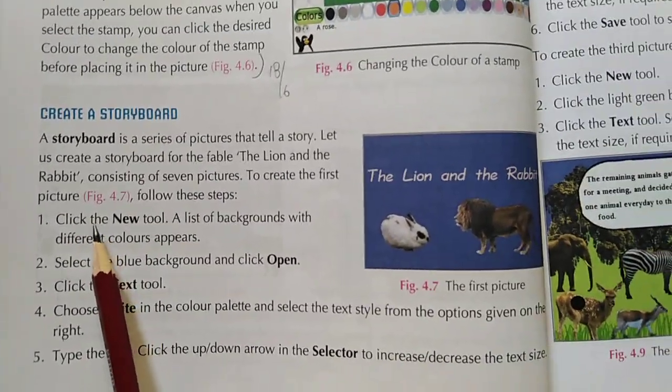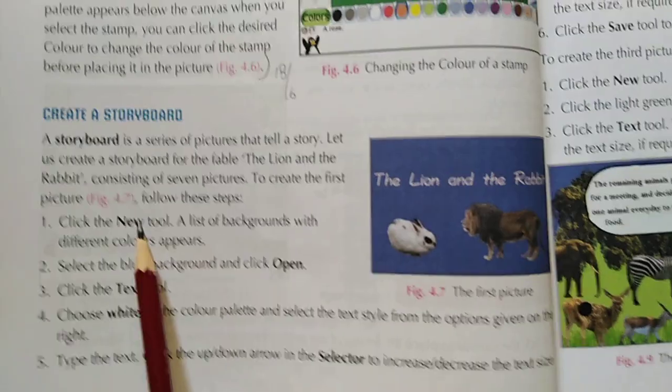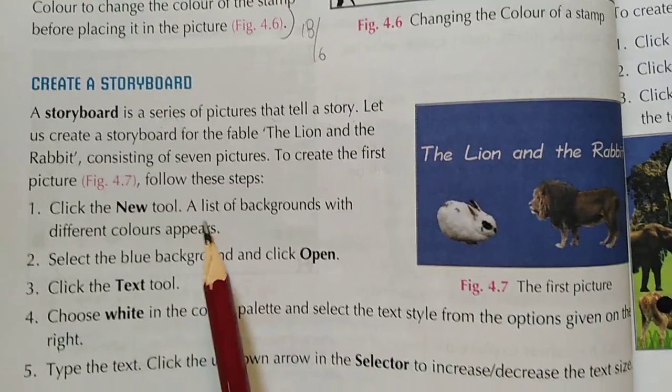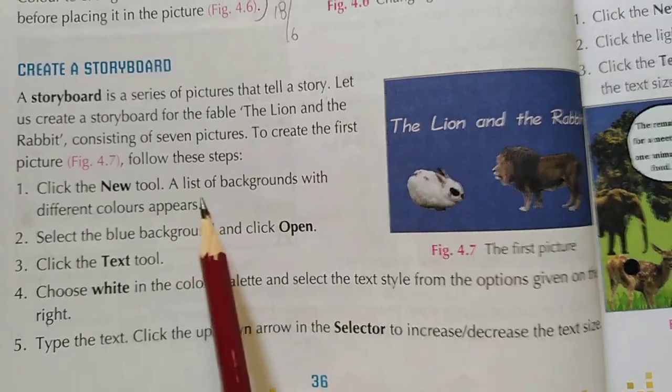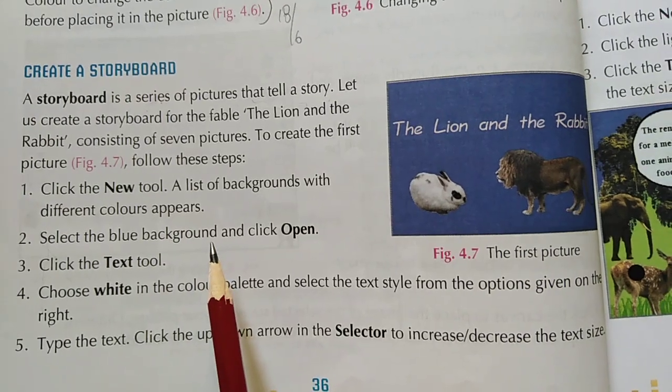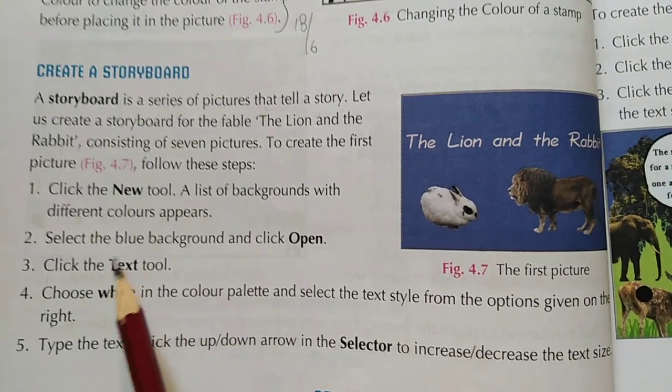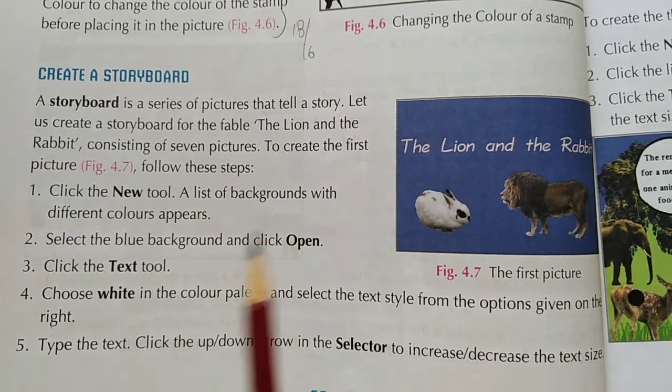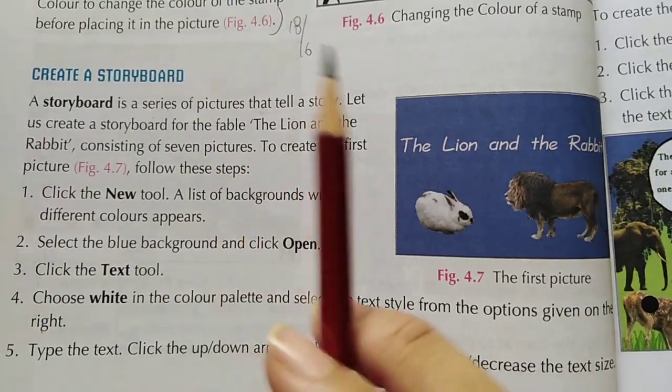First of all, to create the first picture, just click on the New tool which is present here. They will show you a list of background colors. Just select the background color and click Open, then click the Text tool to write something in the picture.